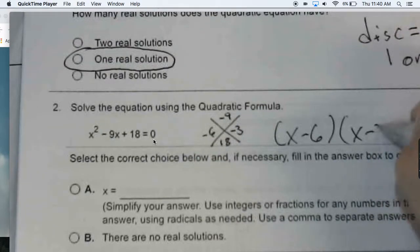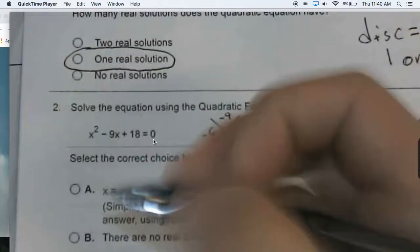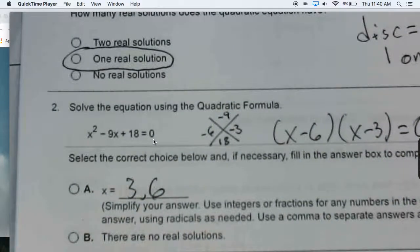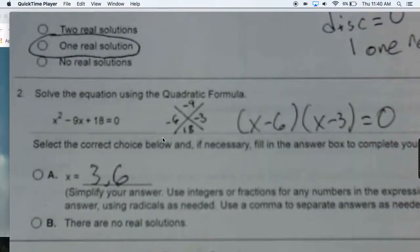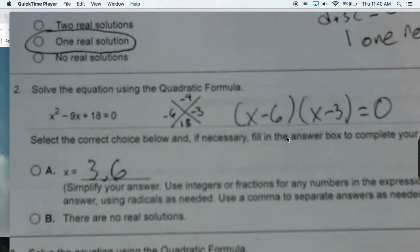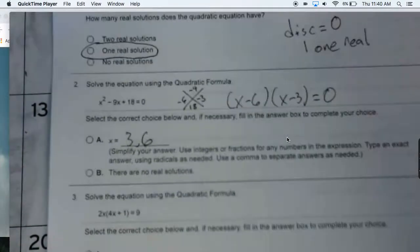So you could solve this as x minus 6 with x minus 3. This all equals 0. So you could just say that x equals 3 and 6. Move on with it. No need to really use quadratic formula here.